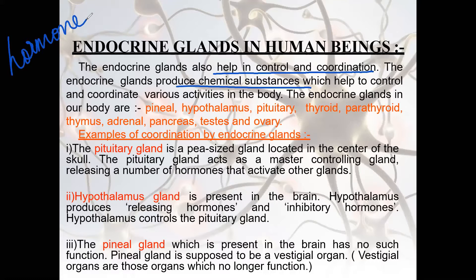There are different types of endocrine glands: pineal, hypothalamus, pituitary, thyroid, parathyroid, thymus, adrenal, pancreas, testes and ovary. Let's now see how these glands help us and what is the role of their secretion.